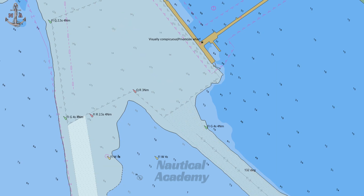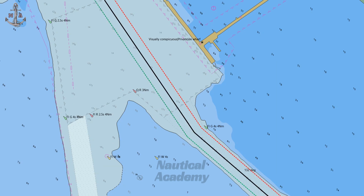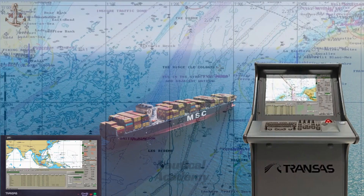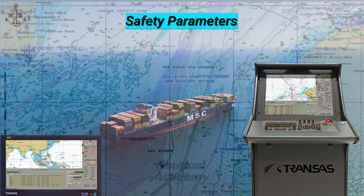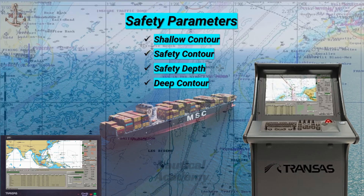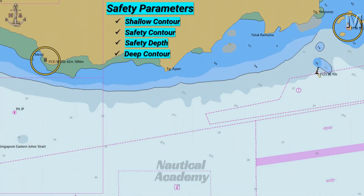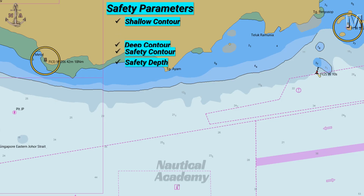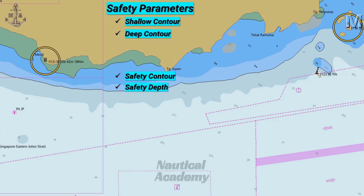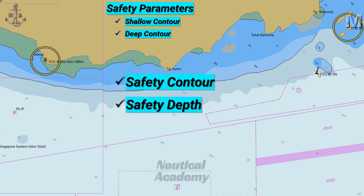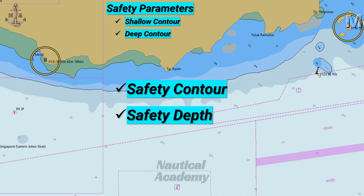Before creating a ship's route in the electronic navigational chart, the first and most important step a navigator must take is to set the safety parameters. These parameters include the shallow contour, safety contour, safety depth, and deep contour, which define the boundaries between shallow, safe, and deep waters on the display. In today's video, we'll focus on understanding the difference between the safety contour and the safety depth, since many navigators often confuse these two important terms.